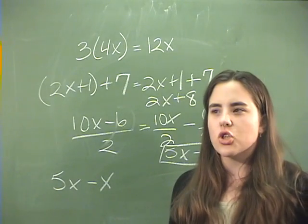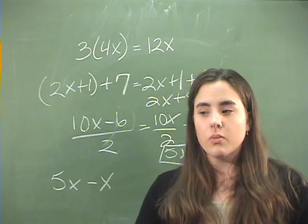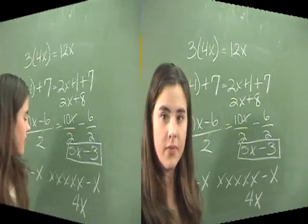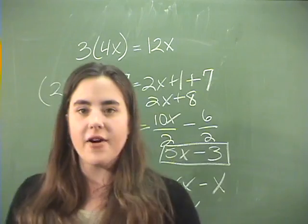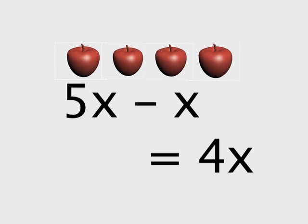The last one, 5x minus x, you have to think about it in terms of what does 5x actually mean. Well, it means you have an x that you multiplied 5 times. So you have x, x, x, x, x, minus that 1x. So you have 5 of them, and you take away 1, that means you have 4x's left. This one is the same thing as doing 5 apples minus 1 apple, except instead of having apples, you have an x. 5 apples minus 1 apple is 4 apples. 5x minus x is 4x.